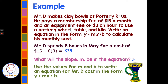So if we put this together: use the values for m and b to write an equation for Mr. D's cost in the form y equals mx plus b. We replace m with the slope of 3, and we replace b with the y-intercept of $15. So in slope-intercept form, y equals 3x plus 15. We could then put in any number for x — say 5 hours or 10 hours — to calculate his cost for the month. The input x is the number of hours, and the output y is his total cost each month.